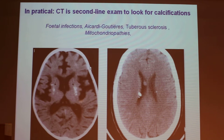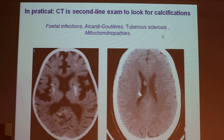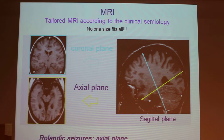In practice, CT is a second-line exam used to look for calcifications — for example in fetal infections, CMV, Aicardi-Goutières syndrome, tuberous sclerosis, or mitochondriopathy.